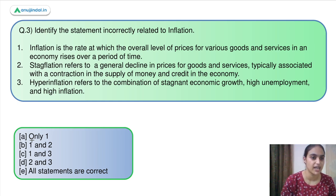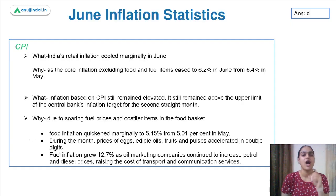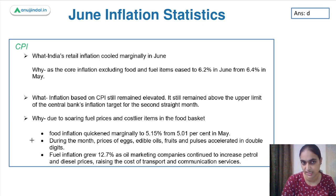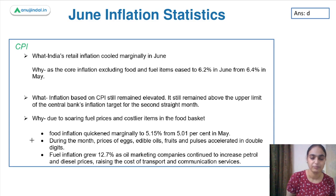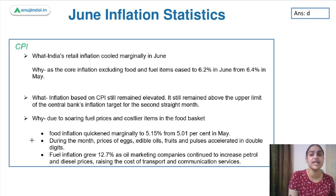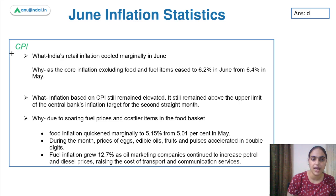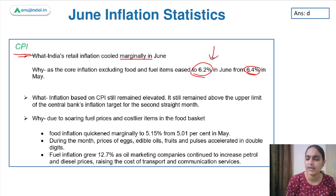Identify the statement incorrectly related to inflation. Let's first discuss the relevant news and then come back to the question. June inflation statistics have been released. Both WPI and CPI have reduced compared to the previous month, but are still at really high levels. Retail inflation (CPI) cooled a bit in June — previously it was 6.4%, now it has become 6.2%. A bit of reduction, but it is still beyond RBI's threshold of 2–6%.